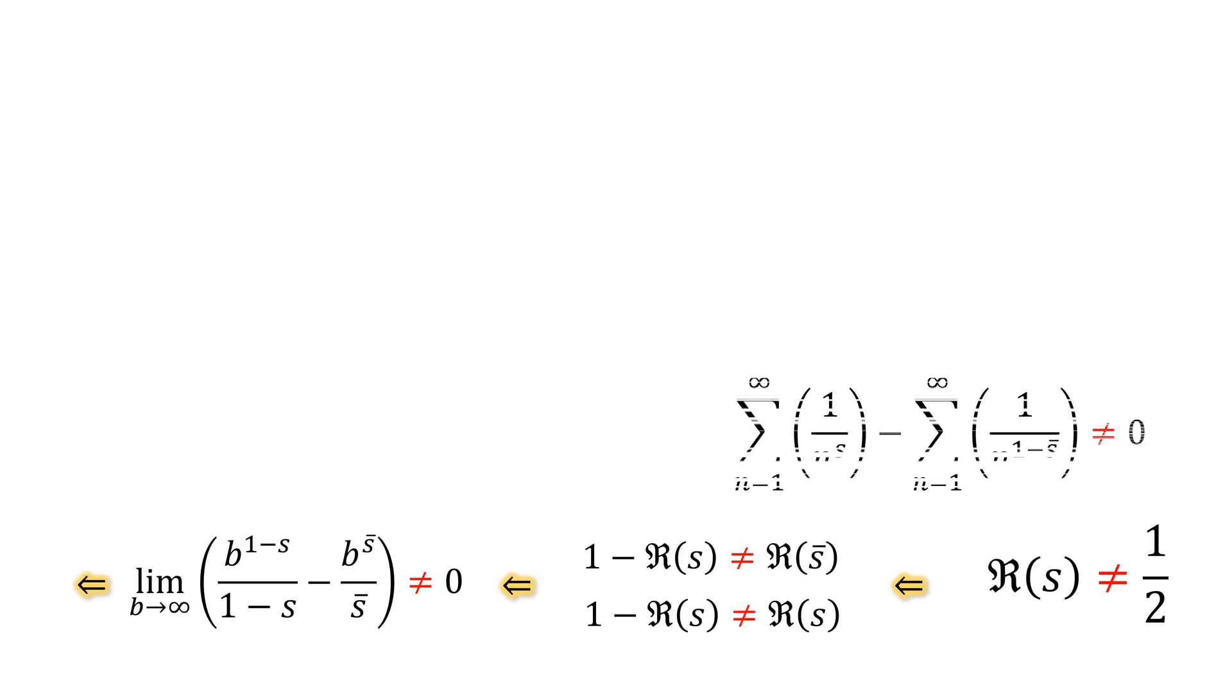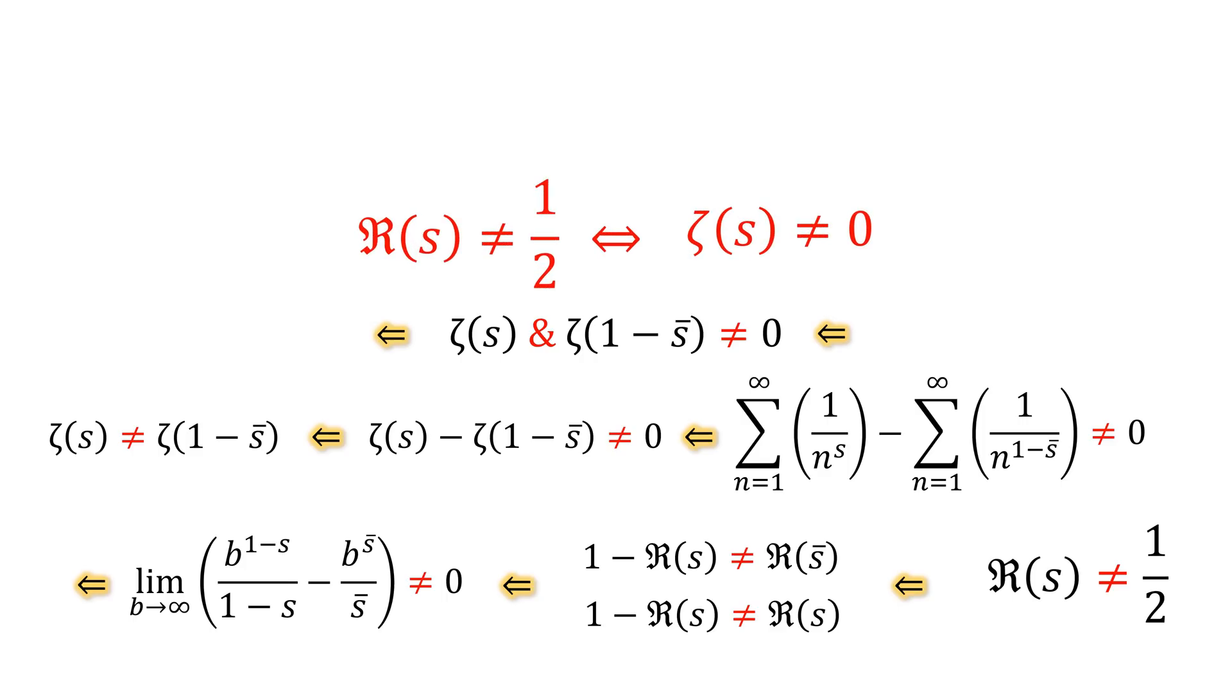Therefore zeta of s minus zeta of one minus s conjugate cannot be zero, which means this. Zeta of s and zeta of one minus s conjugate cannot be equal to zero. In other words, we prove that if the real part of s is not equal to one half, the zeta of s cannot be equal to zero. This completes the proof.